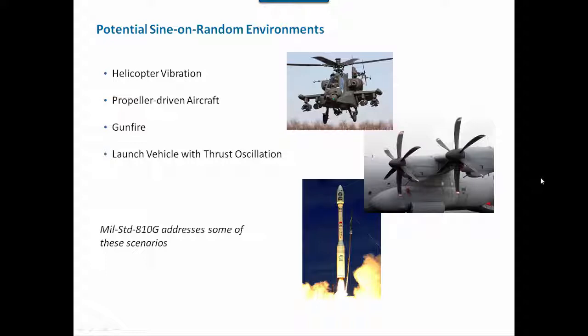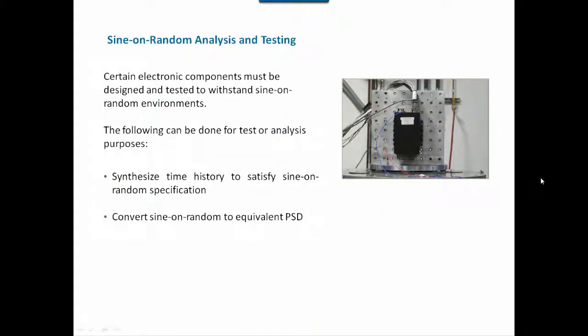A fourth example is a launch vehicle with thrust oscillation. For a solid rocket motor, a standing-wave pressure oscillation can set up in the combustion cavity, creating a thrust oscillation or resonant burn effect. There is also broadband random vibration from the combustion process and external aerodynamic effects such as turbulent boundary layers and shock waves.